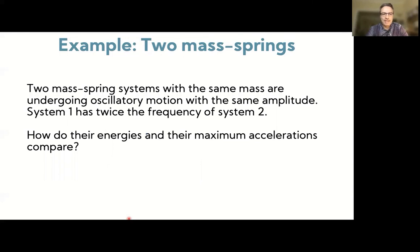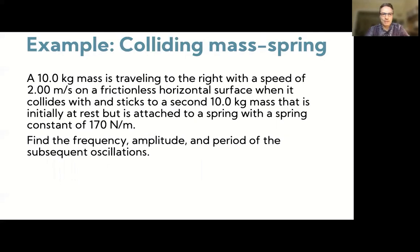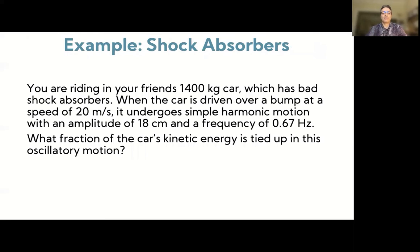Here are three example problems. First: two mass-spring systems with the same mass oscillate with the same amplitude, but system one has twice the frequency of system two — compare their energies and maximum accelerations. Second: a 10 kg mass moving at 2 m/s collides and sticks to a stationary 10 kg mass attached to a spring with k = 170 N/m — find the frequency, amplitude, and period of the subsequent oscillations. Third: a 1400 kg car with bad shock absorbers undergoes SHM with amplitude 18 cm and frequency 0.67 Hz after hitting a bump at 20 m/s — what fraction of the car's kinetic energy is tied up in the oscillatory motion? Try these yourself; solutions will be posted separately.